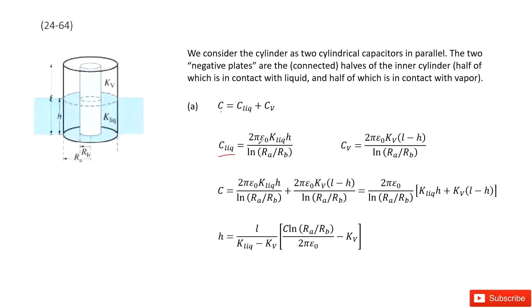So for cylindrical capacitance, you can see this is 2πε₀. We times the dielectric constant for liquid, and then times the edge.